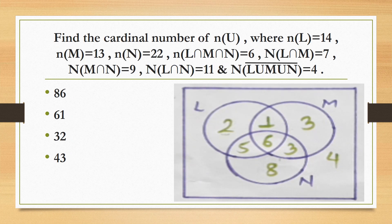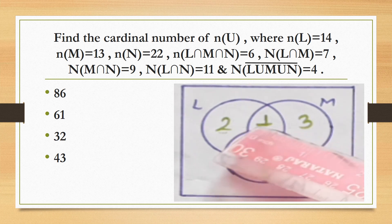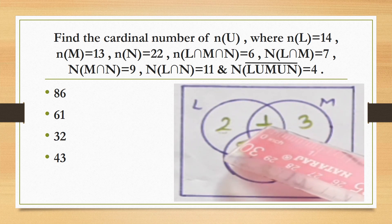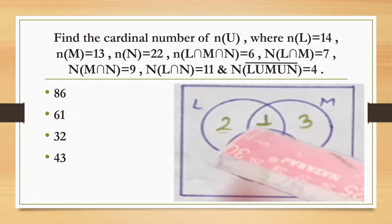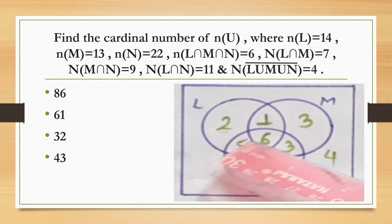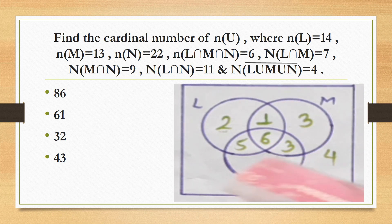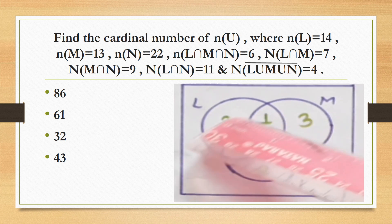Find the cardinal number of L union M union N, where n(L)=14, n(M)=13, n(N)=22, n(L∩M∩N)=6, n(L∩M)=7, n(M∩N)=9, n(L∩N)=11, and the complement of (L union M union N) has 4 elements. Using the Venn diagram formula, first fill in the intersection L∩M∩N=6, then the pairwise intersections minus 6: L∩M only=1, and compute only-L=14 minus (5+6+1)=2. Using the formula gives the cardinal number of L union M union N.